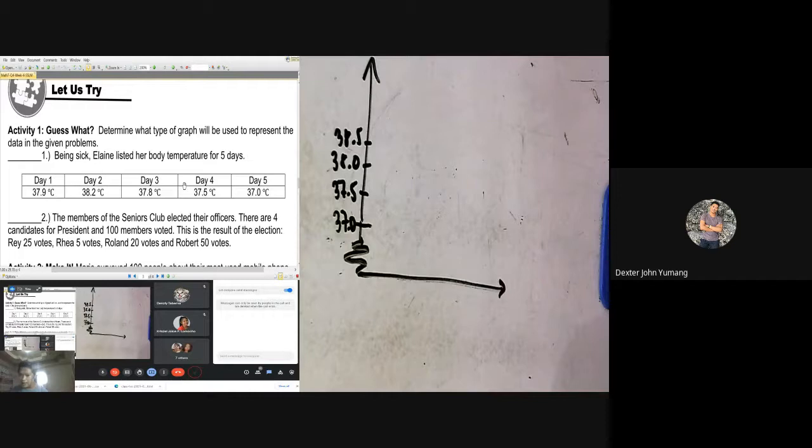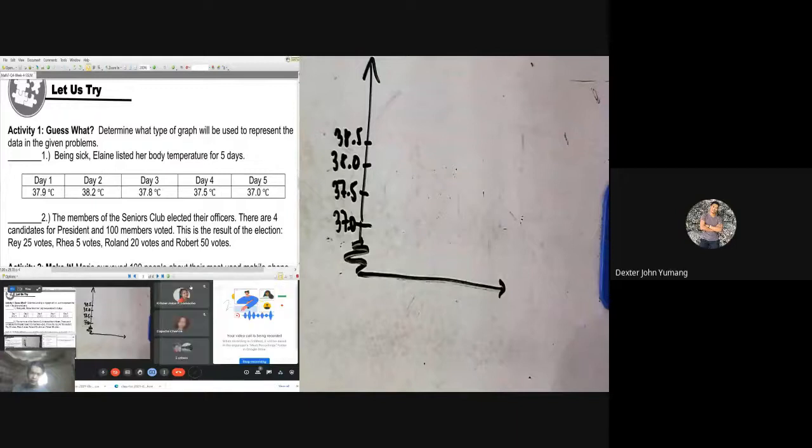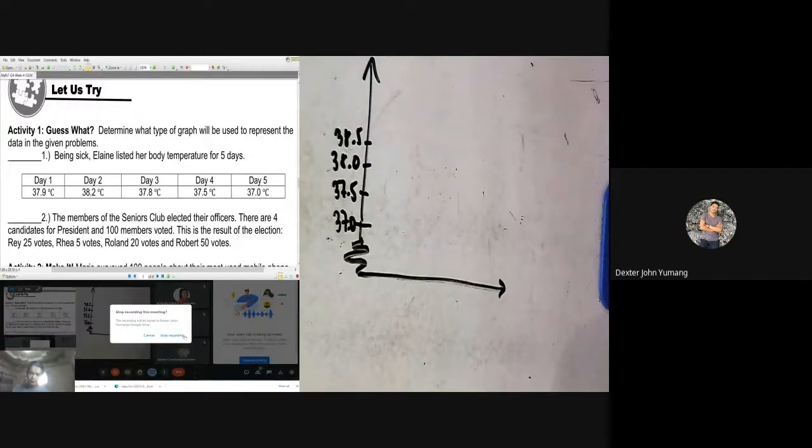In that case, you'll make what we call a bar graph. So can you do it within 30 minutes? Okay, so let's end this one and you may start the activity now. Submit your answers at Facebook.com slash Humen 2021. Goodbye everyone, thank you and God bless. Bye sir.